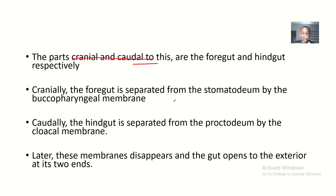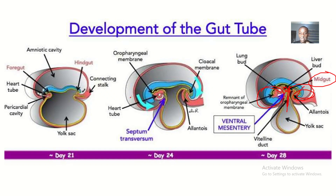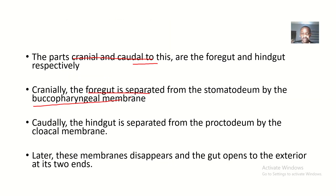Cranially, the foregut is separated from the stomodeum by the buccopharyngeal membrane. Caudally, the hindgut is separated from the proctodeum by the cloacal membrane.